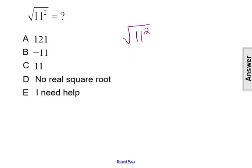So if we have the square root or positive principal square root of 11 squared, we can simplify that. 11 squared is 121. So we're thinking of what positive number squared equals 121, and that is a positive 11.